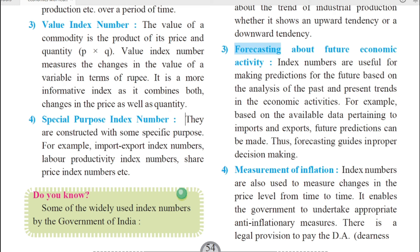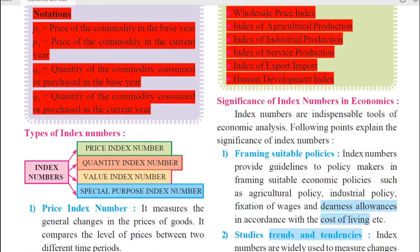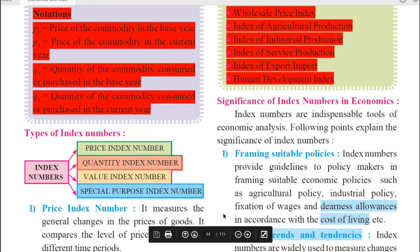So in today's video lecture, we have studied the definition of index number, understood the features of index number, and seen the four types of index number — namely price index number, quantity index number, value index number, and special purpose index number. In the next video lecture, we will further continue with the same chapter, moving towards the significance of index numbers in economics. Till then, stay safe, stay connected. Thank you very much.